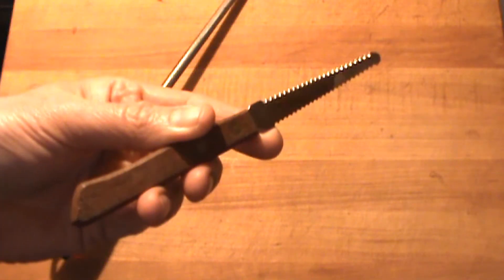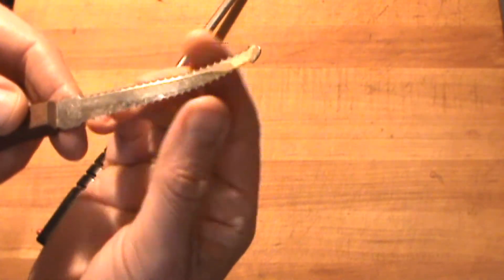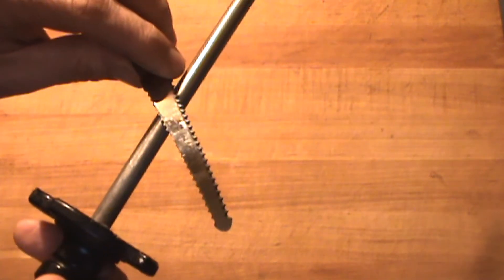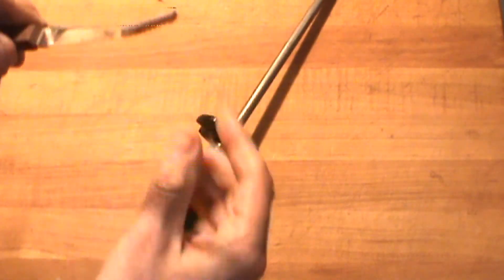The same thing applies to this cheap grapefruit knife. This one's sharpened differently on both sides. Same thing - remove the burr like this and remove the burr like this. That's it, I'm done.